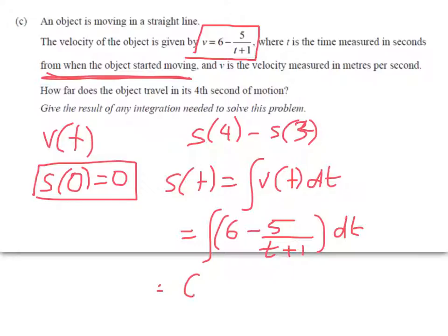So that equals the integral of 6 minus 5t over t plus 1 dt. And when I anti-differentiate that, I get 6t minus 5 log t plus 1 plus c.